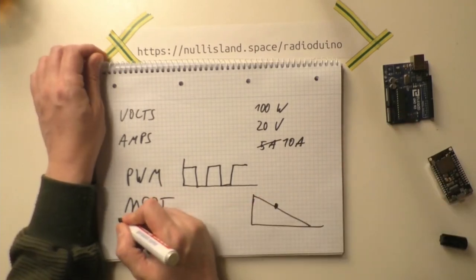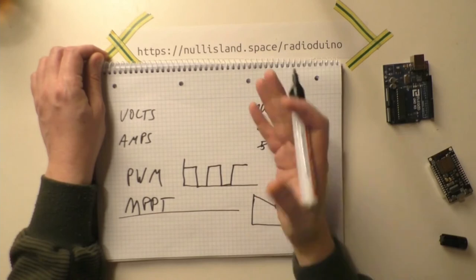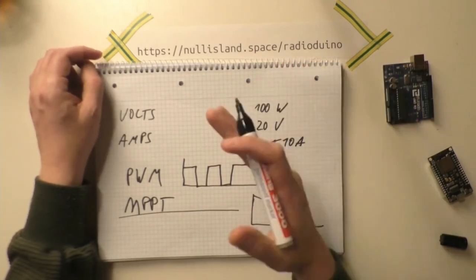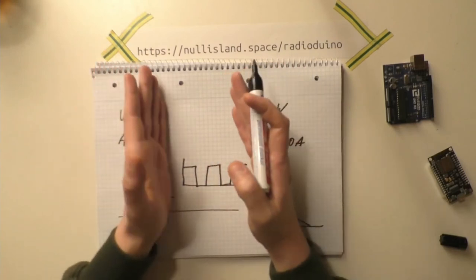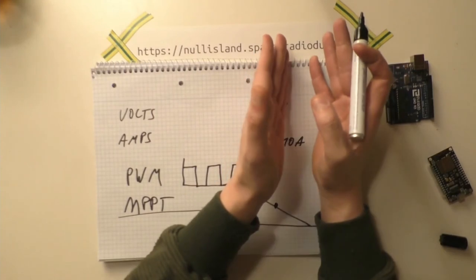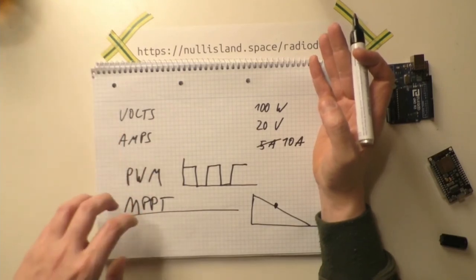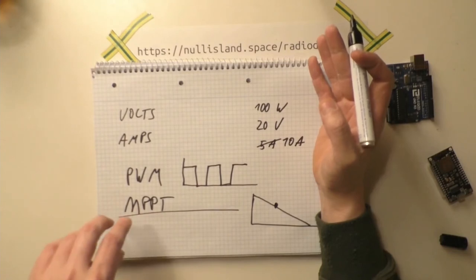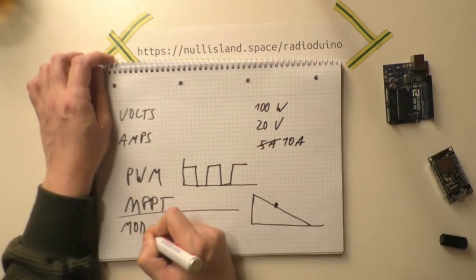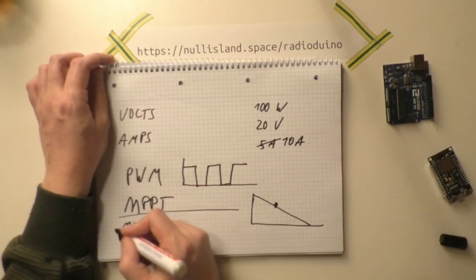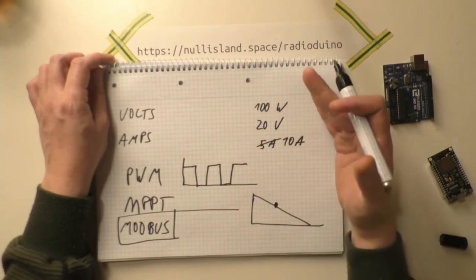One other thing to look at for the charge controller is connectivity. Many charge controllers have some sort of display, but that's usually useless unless you're standing in front of it reading values. What you really want is an interface where you can read out data automatically — usually Modbus — which really helps you log data and see how you can improve your system.